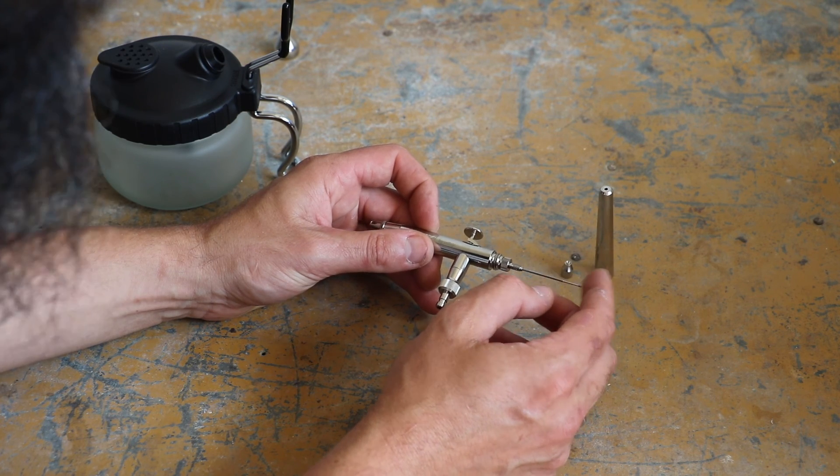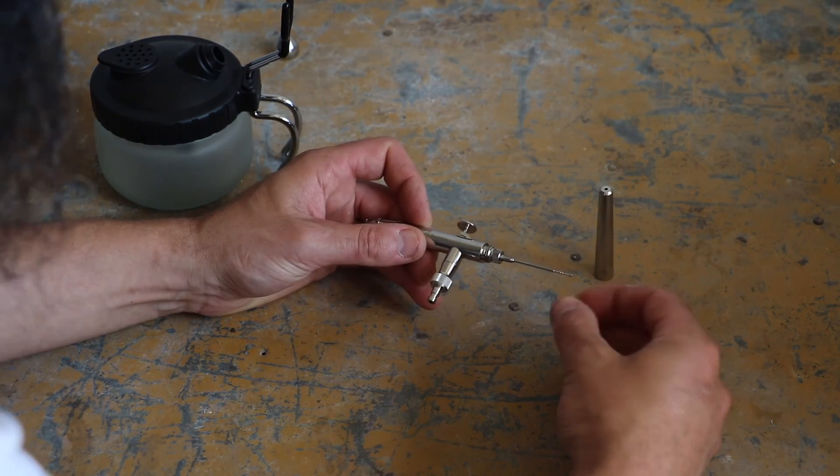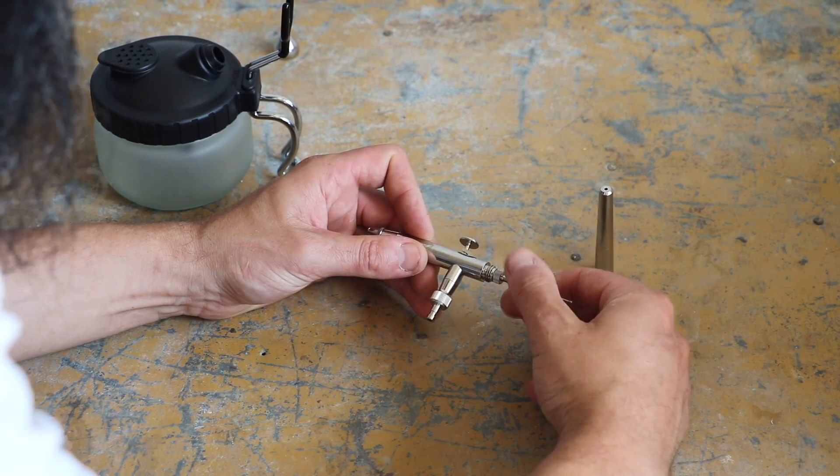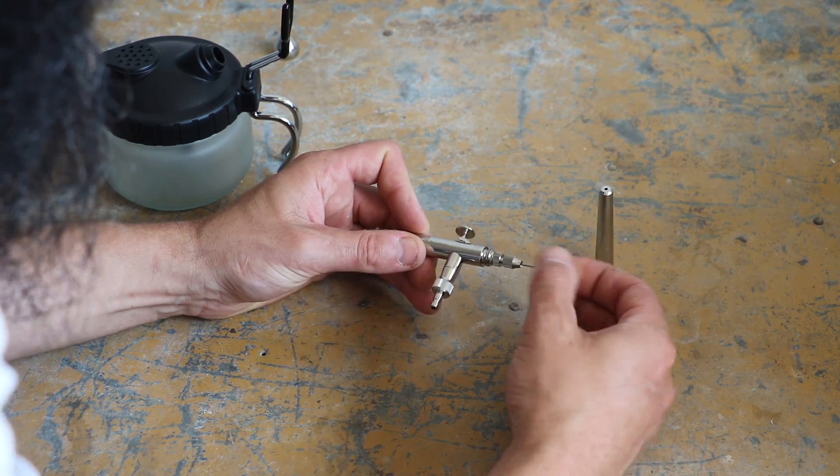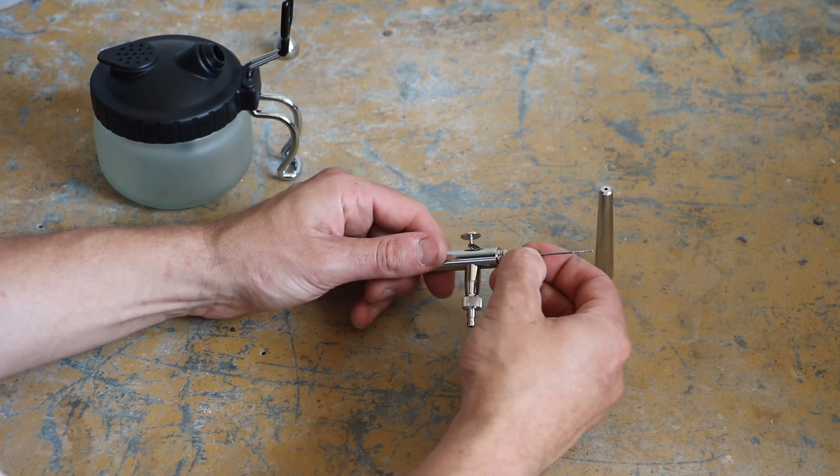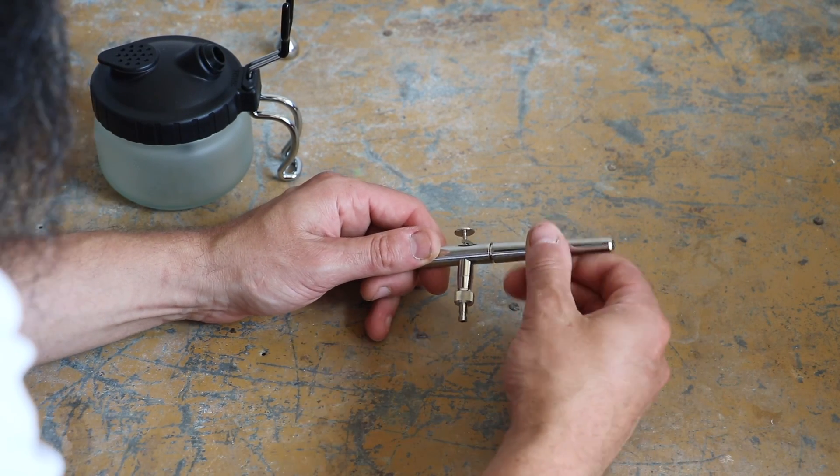And this is the bit as I've said just before that is the most nervy but if you're gentle and just steady and just gently push it through the slight resistance there is in the middle there we are we're in. What we now do is we put the securing screw over the top and screw that up like so. And then we can put the body on.